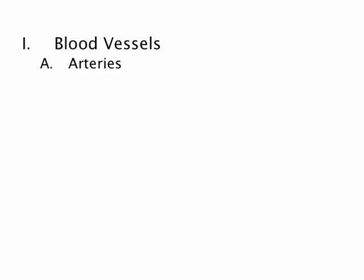We're going to begin by looking at some of the structures of the different blood vessels in the body. The first blood vessel we'll look at is called an artery. Arteries function to transport blood away from the heart. A lot of times you'll hear that arteries have oxygenated blood in them, and most of the time that's true, but there are exceptions. So the hard and fast rule on an artery is that it's transporting blood away from the heart.